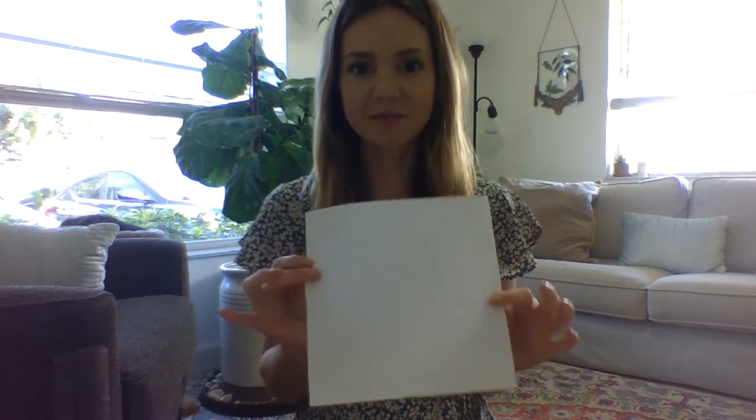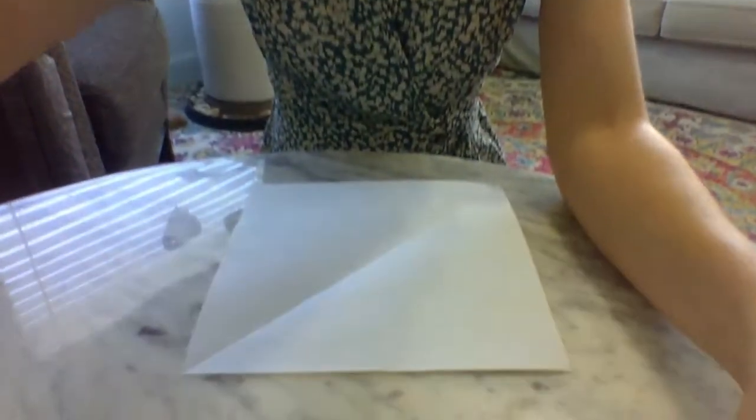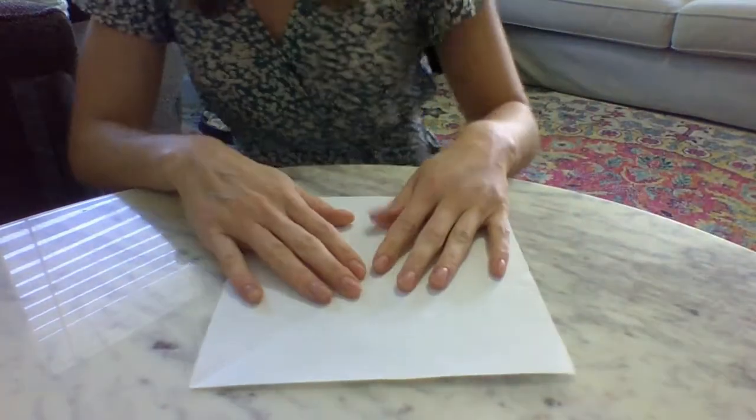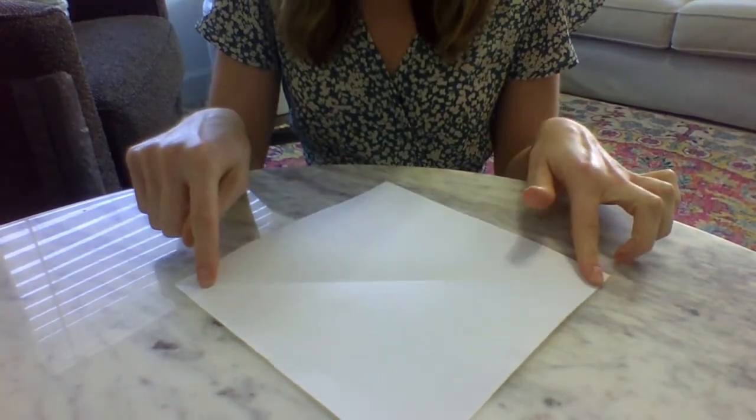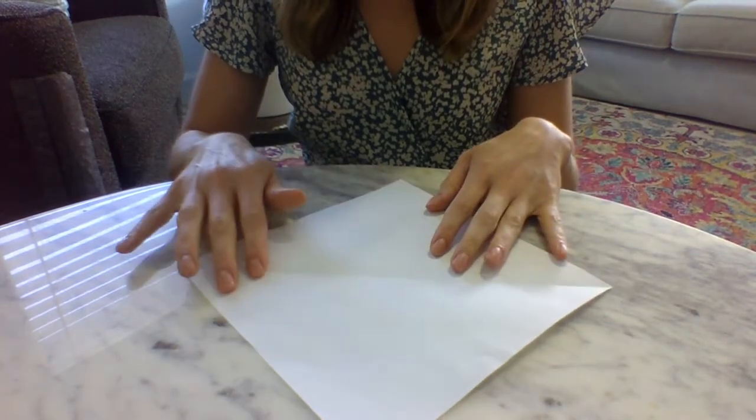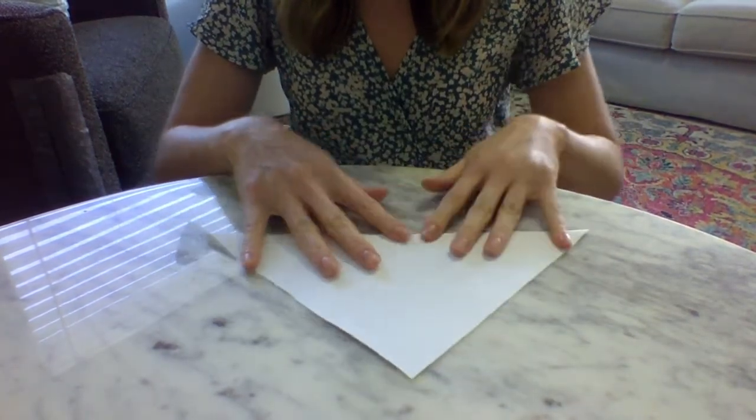Using this square piece of paper that we've made, I'm going to show you how to make a box. So we're going to use this crease that we've already made. Then we have it folded this way.